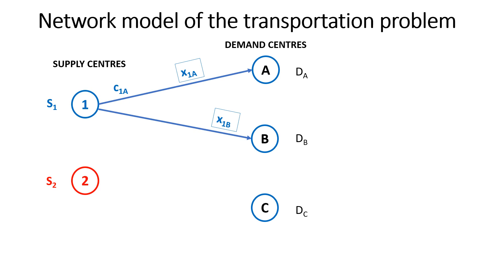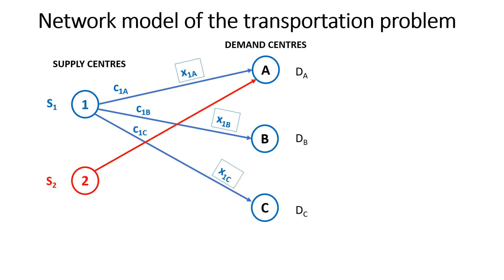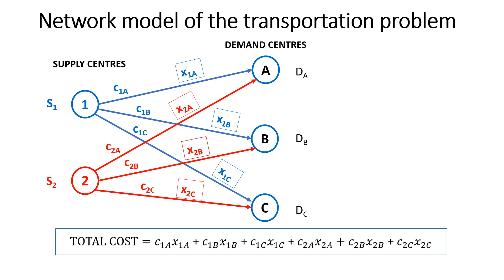Similarly, when connecting supply point one and demand center B, X1B is the number of units carried on this route at a cost of C1B per unit. You also have the connection between one and C. When connecting from supply center two to the demand centers, you have a similar setup. Each arrow shows the route between a supply point and a demand center.